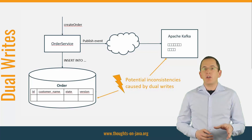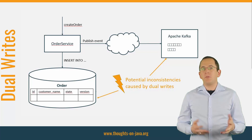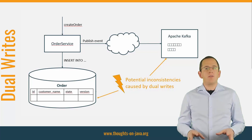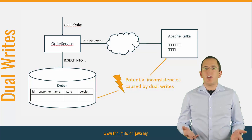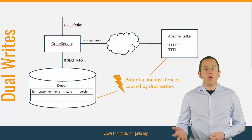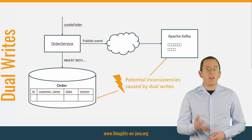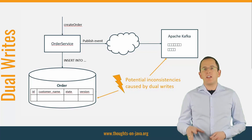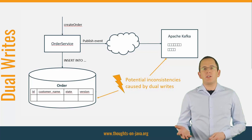As long as both operations are successful, everything is OK. Even if the first transaction fails, it's still fine. But if you successfully committed the first transaction and the second one fails, you are having an issue. Your system is now in an inconsistent state and there's no easy way to fix it.